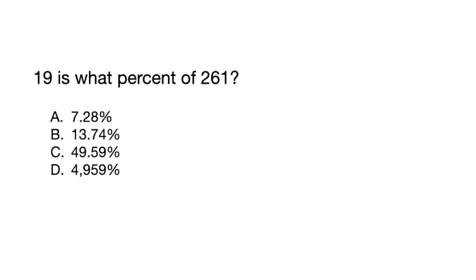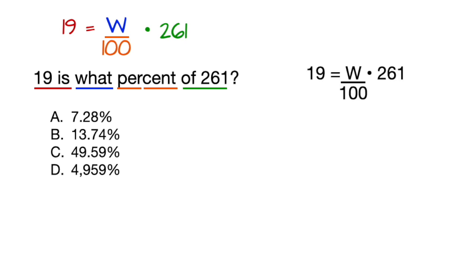So I'm going to show you a foolproof way to develop an equation to solve for what they're asking for. Let's just write what we read. 19 is means 19 equals. What means put a variable there. Per means divide, cent is referring to century, so divide by 100. Of means multiply, so times 261. There's our equation.